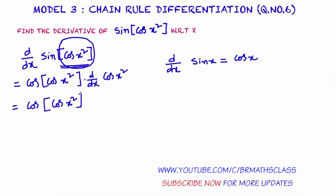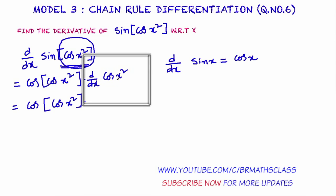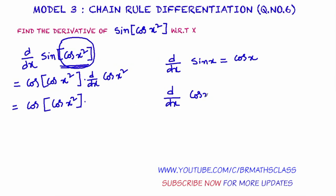Now observe: derivative of cos x squared. We don't have any direct formula for derivative of cos x squared, but we have the formula for derivative of cos x — derivative of cos x is minus sin x. Now imagine x squared as x; if you imagine x squared as x, it looks like cos x. So derivative of cos x is minus sin x, and x here is x squared.